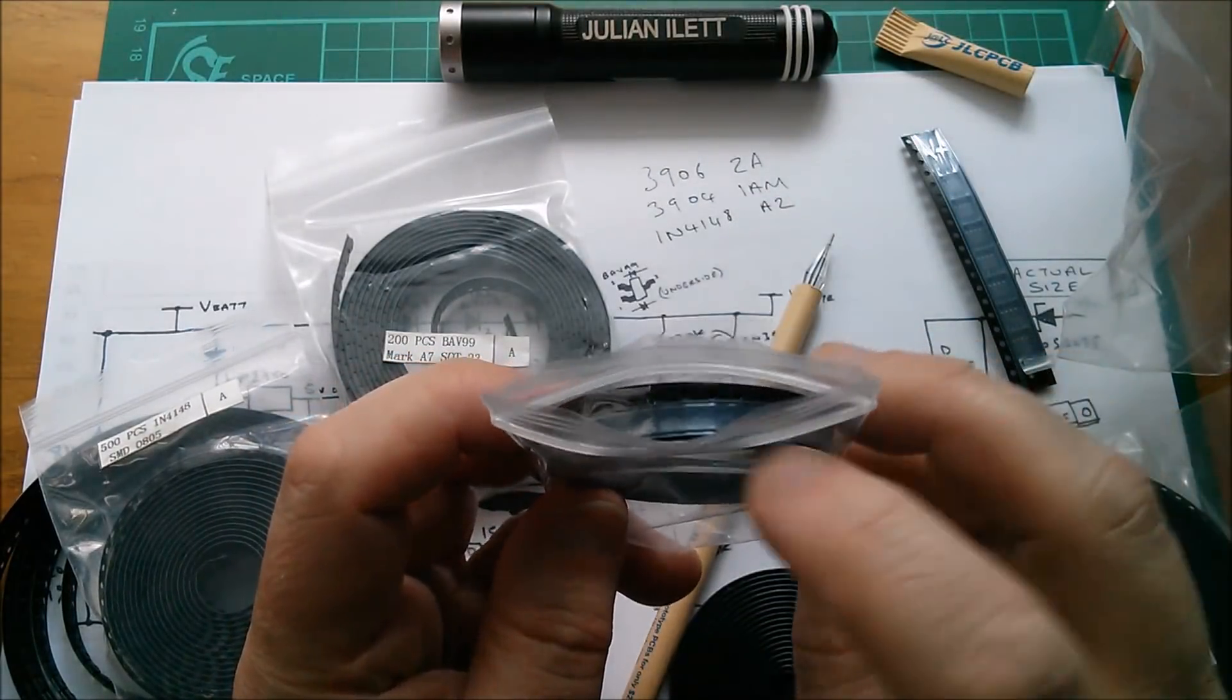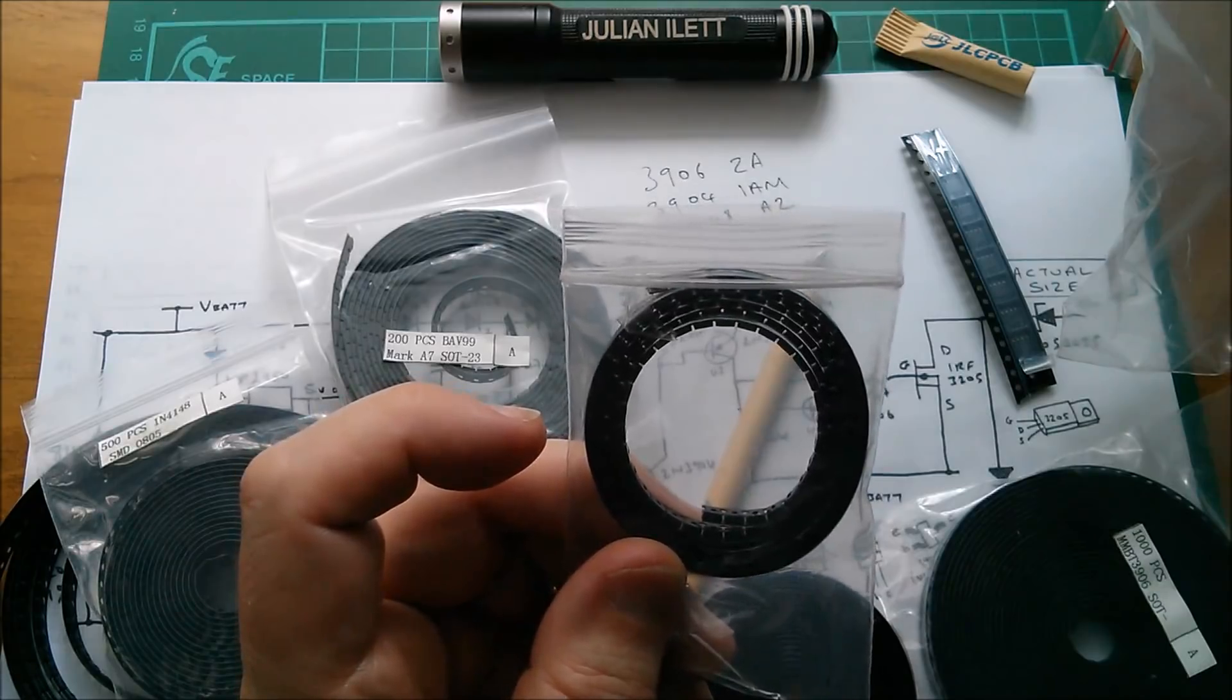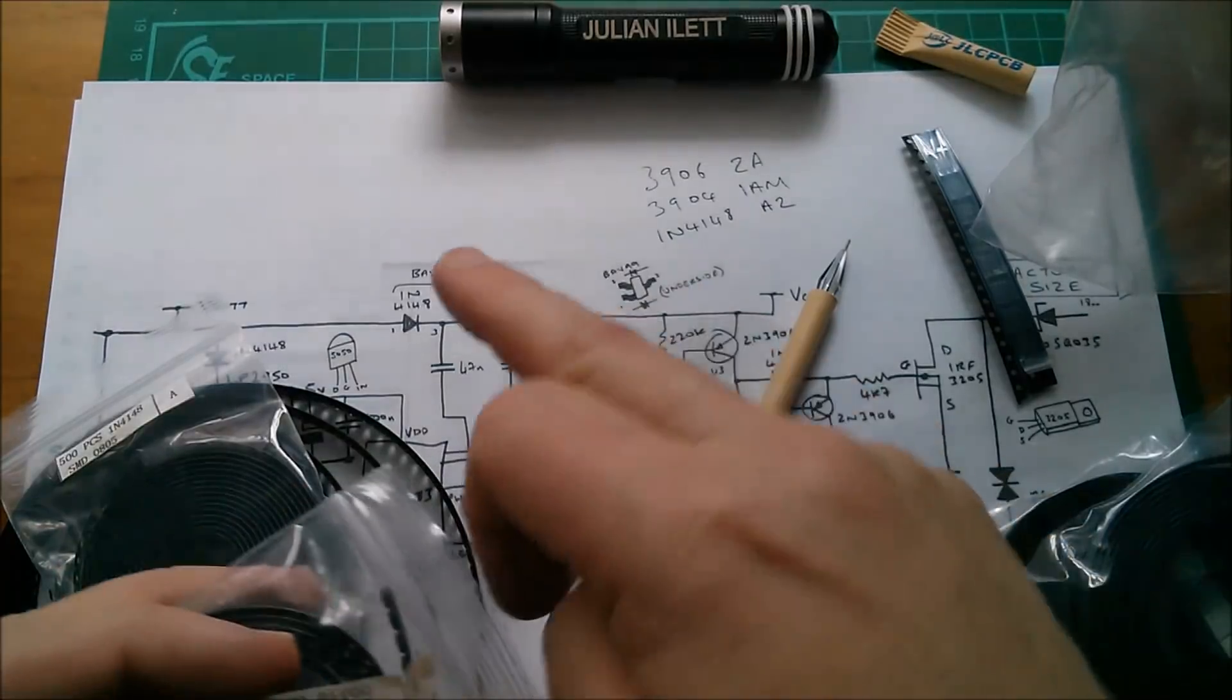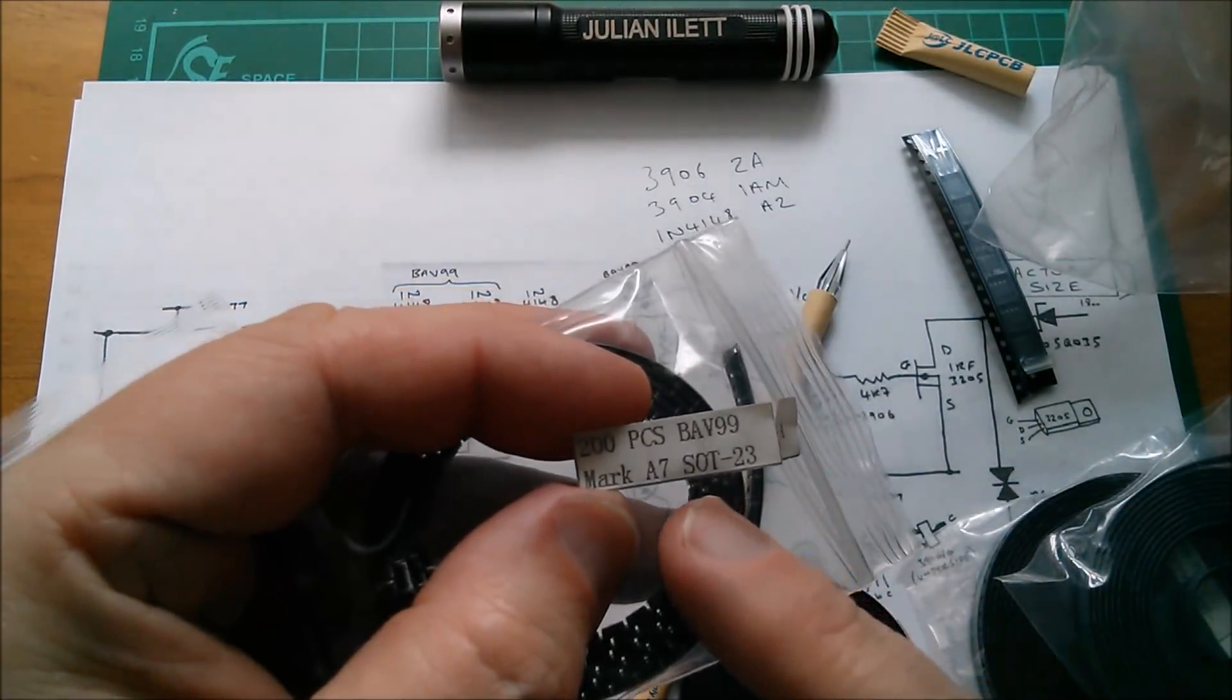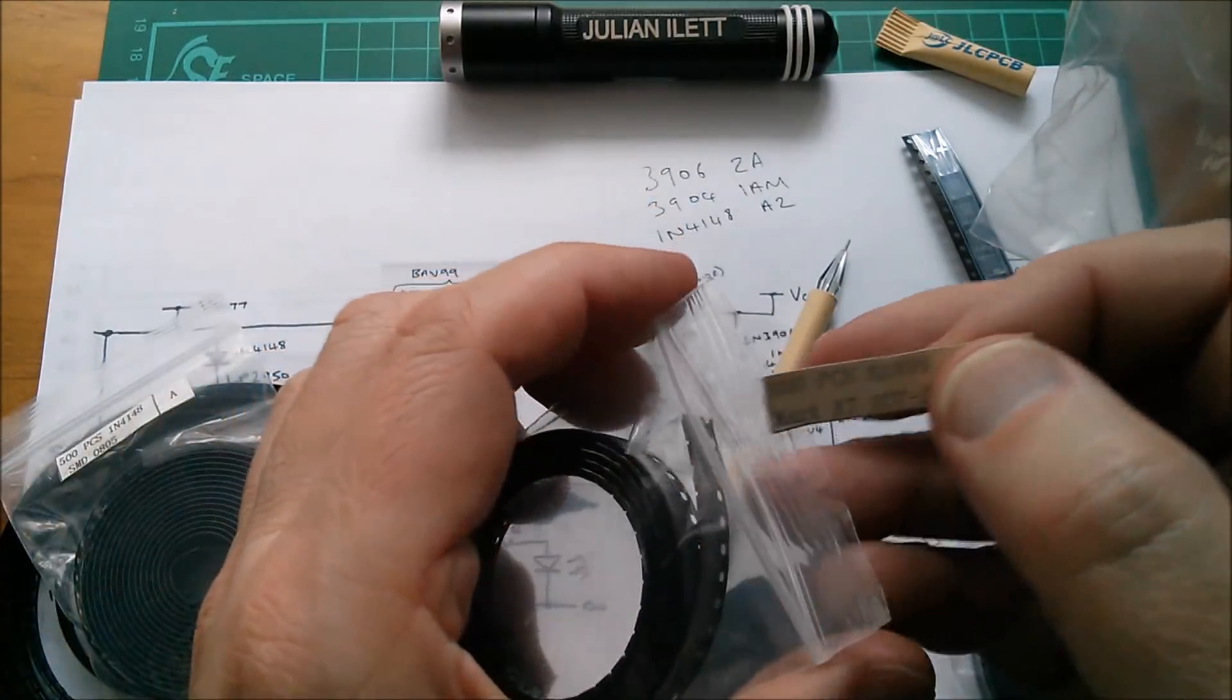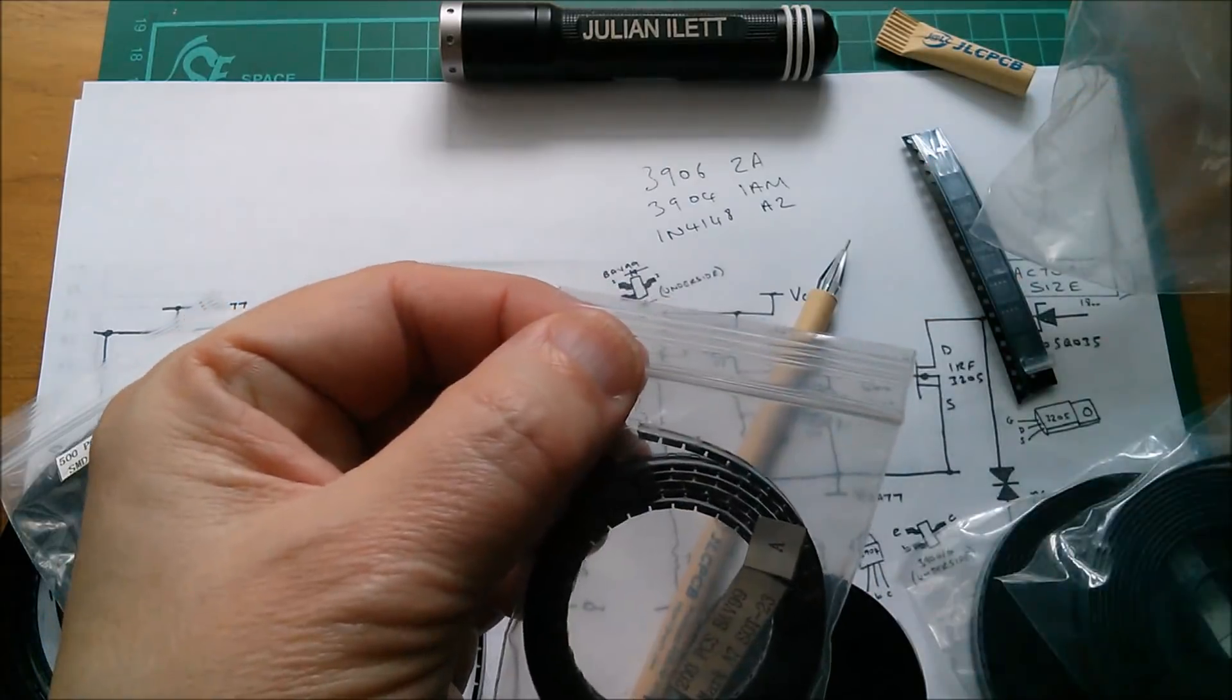What are these ones? These are SOT23 3-pin, and they're marked A7, let's check them out. Ah, okay, these are BAV99, the dual diode. You can see that it says mark A7, so I better put that label in there before I start to get completely and utterly confused.